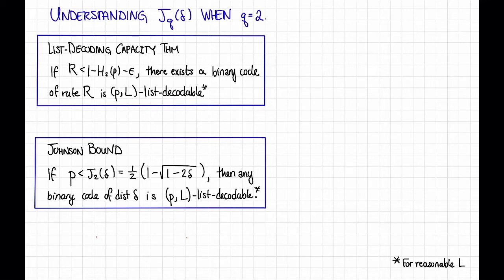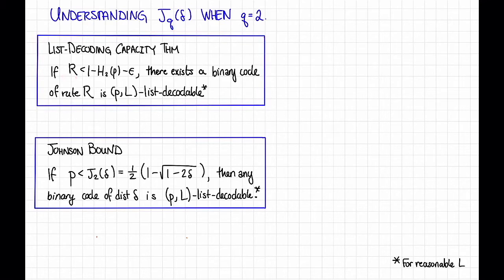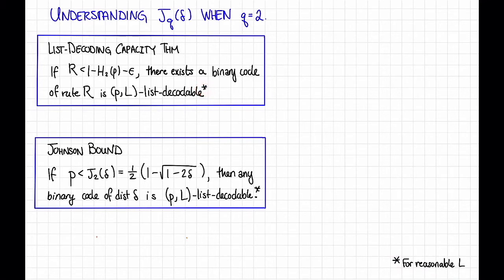Let's start with the binary case, that is when q equals 2. The list decoding capacity theorem says that when the rate is less than 1 minus the binary entropy of p minus some epsilon, then there exists a binary code of rate r that is p-l list decodable. There's a little asterisk here which says for reasonable l — in this case l was big-O of 1 over epsilon. But for this quantitative comparison, I want to focus on the tradeoff between p and r, so I'll call the list size reasonable if it's polynomial and just say list decodable.